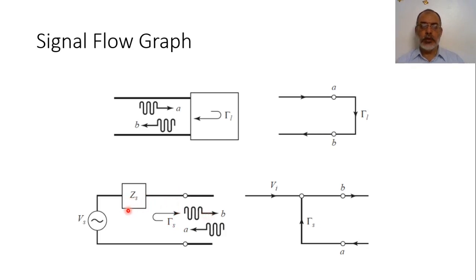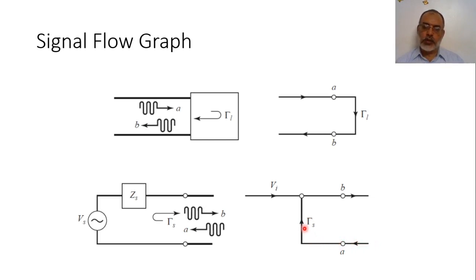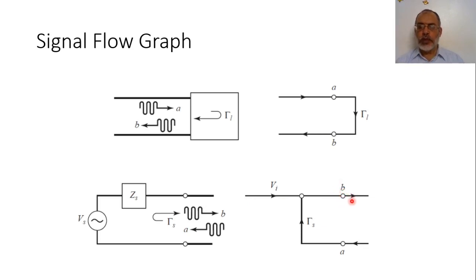If a source with internal impedance Z_source is connected to a load or transmission line, there is a reflection coefficient gamma_source at the input of the source, where gamma_source = (Z_node − Z_source) / (Z_node + Z_source). This port can be represented by two nodes A and B: B is the wave going out from the source, and A is the reflected wave multiplied by gamma_source back to B. In addition to the reflected signal, the total signal at node B includes the input signal from the voltage source itself.